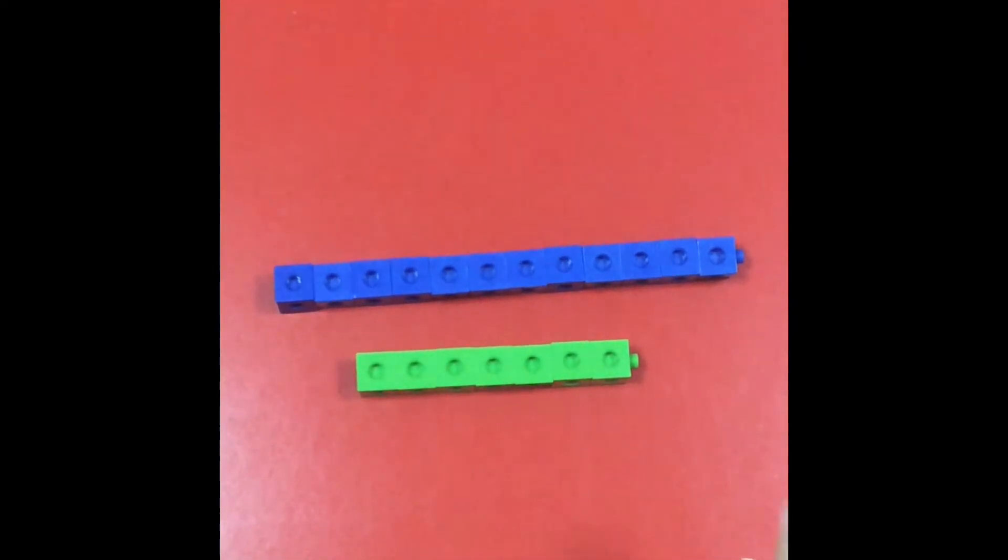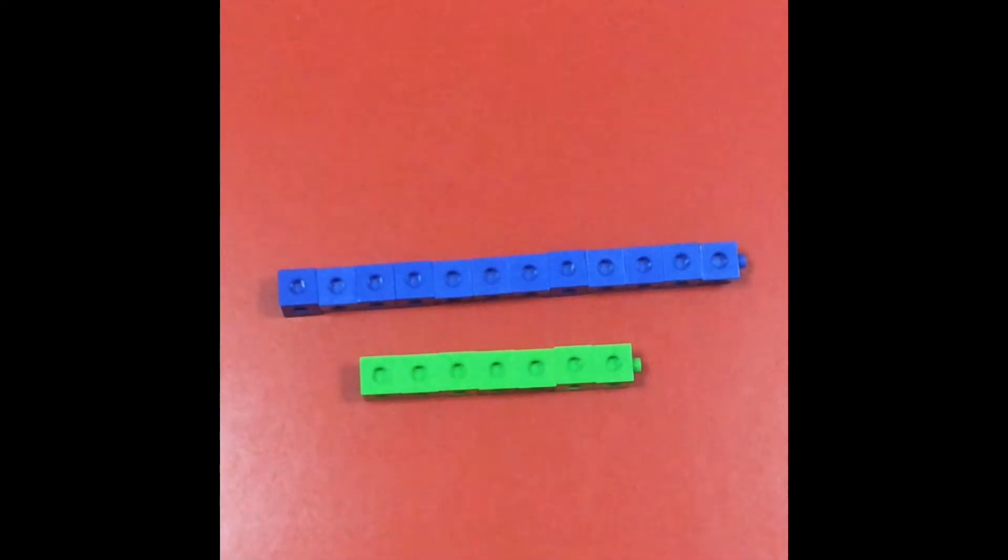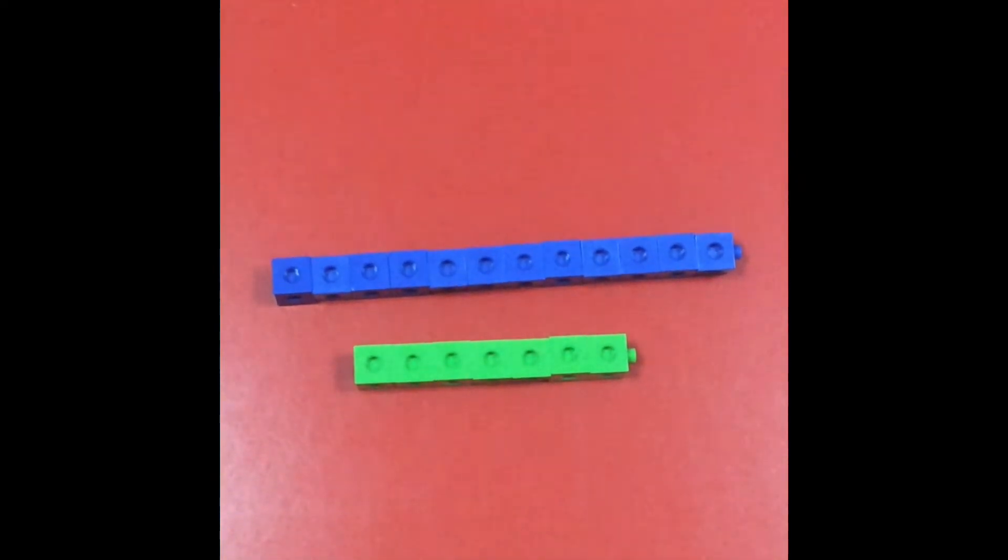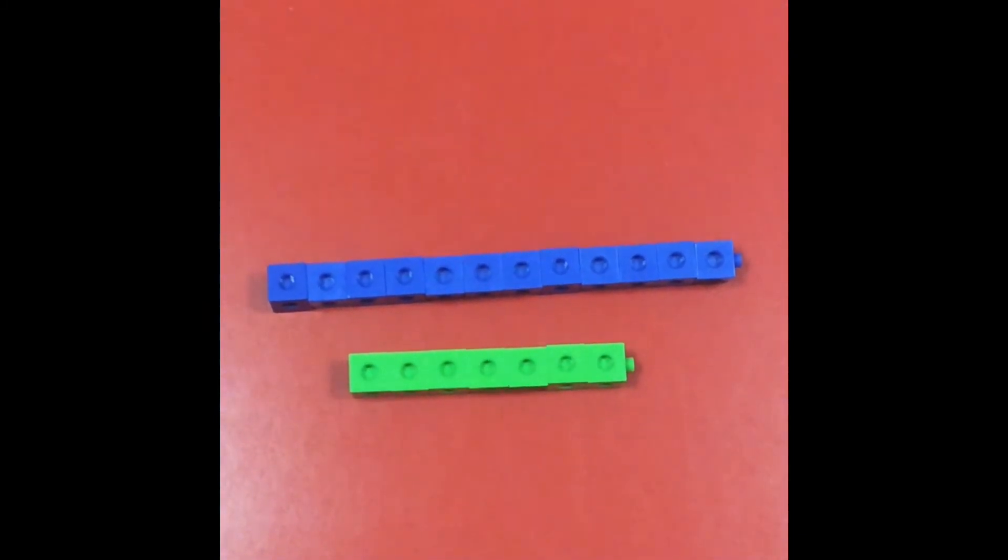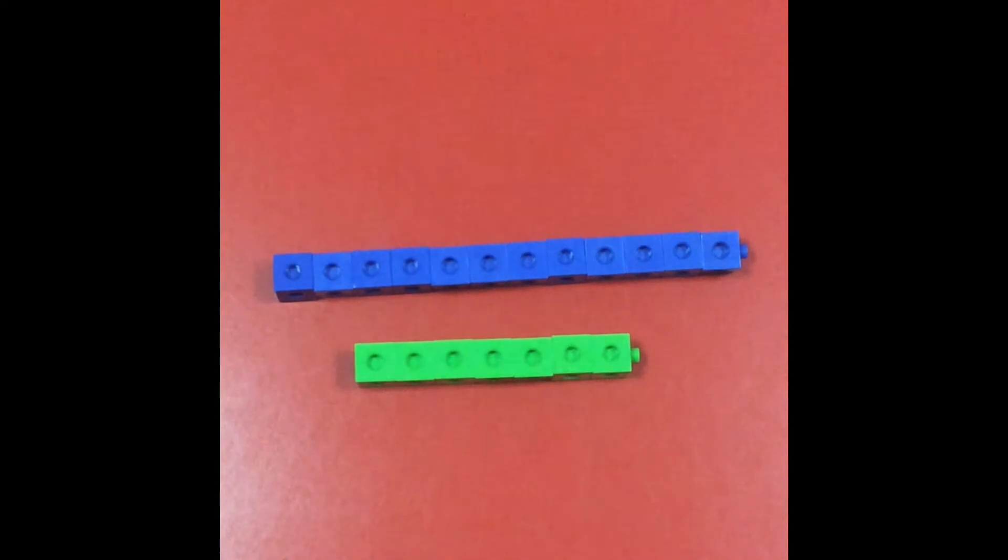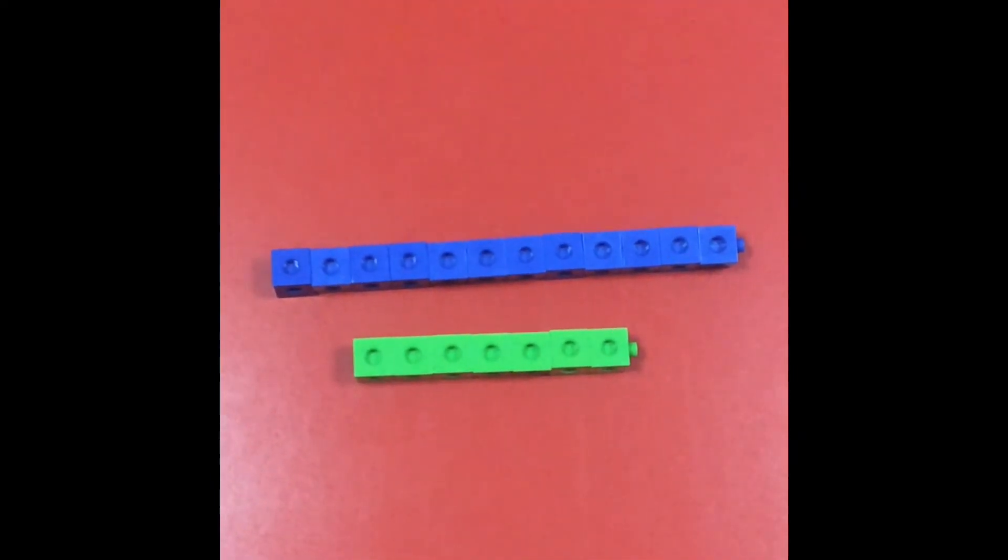Once the children have mastered counting backwards and taking physical equipment away, the next way that we teach them subtraction in year one is to find the difference. This is a really difficult concept for them because it involves adding on even though we're actually subtracting.